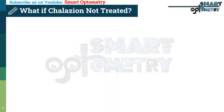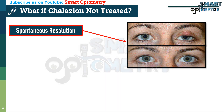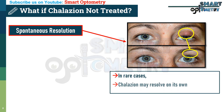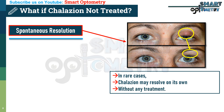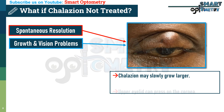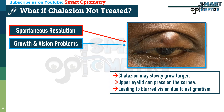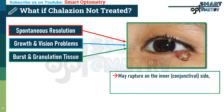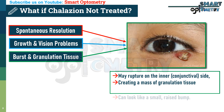What happens if a chalazion is left untreated? First, spontaneous resolution: in rare cases, a chalazion may resolve on its own without any treatment. Second, growth and vision problems: a chalazion may slowly grow larger, and a large chalazion on the upper eyelid can press on the cornea, leading to blurred vision due to induced astigmatism. Third, burst and granulation tissue: occasionally, an untreated chalazion may rupture on the inner conjunctival side, creating a mass of granulation tissue that can look like a small raised bump.